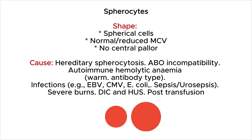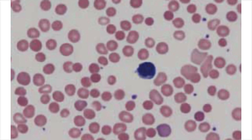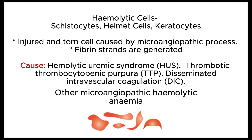Schistocytes result from a microangiopathic process that leads to cell injury when fibrin strands are generated. This is seen in hemolytic uremic syndrome (HUS), thrombotic thrombocytopenic purpura (TTP), disseminated intravascular coagulation (DIC), sepsis, severe burns, post-transfusion hemolysis, and other microangiopathic hemolytic anemias.